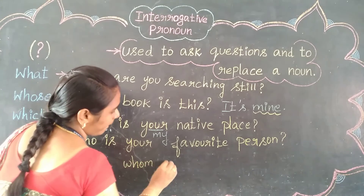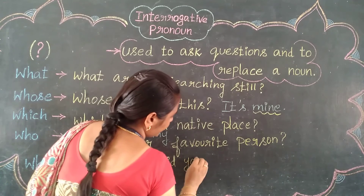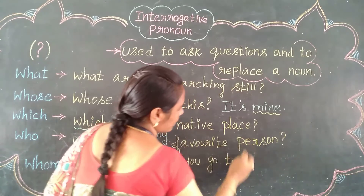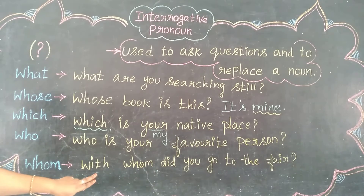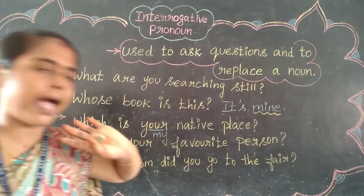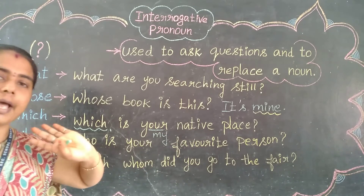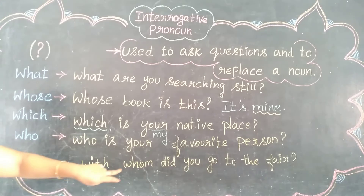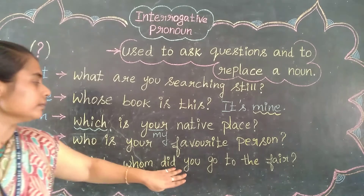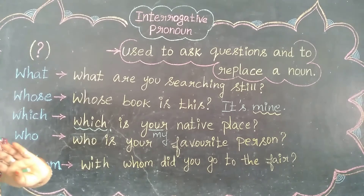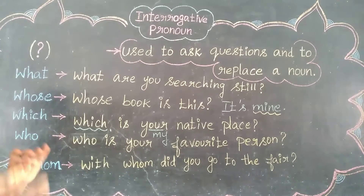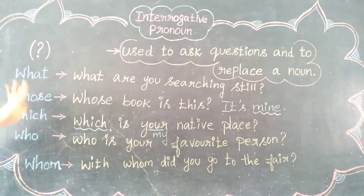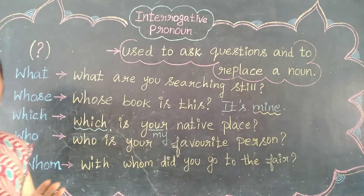Next: Whom. Example — 'With whom did you go to the fair?' The answer would be: 'I go to the fair with my friend' or 'With my friend, I go to the fair.' Both are correct. This is how we form sentences using these interrogative question words. Interrogative pronouns always explain about question sentences.